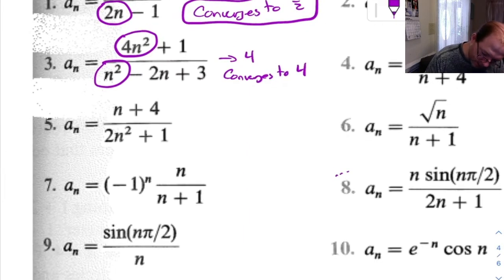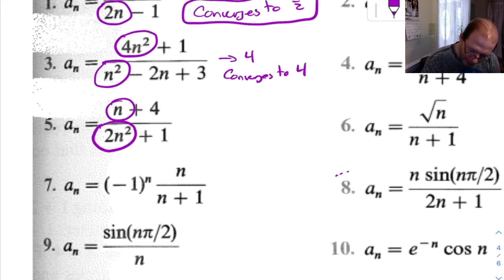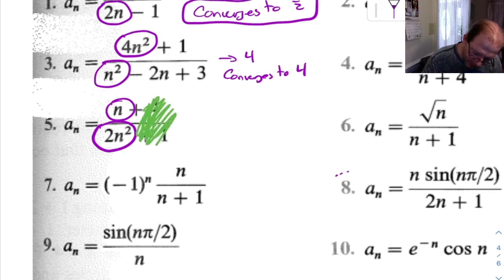Let's keep going. This next one, we've got n as our dominant term on top and 2n squared as our dominant term on bottom. So we can eliminate everything else.